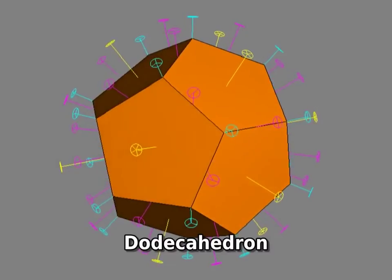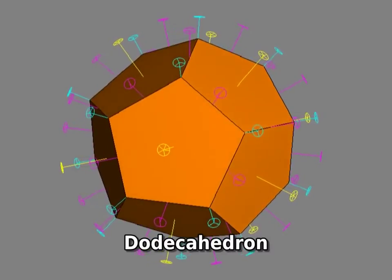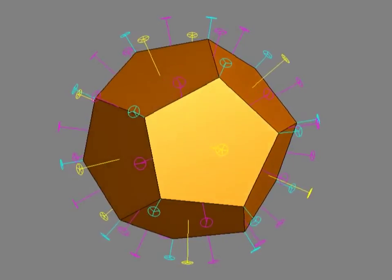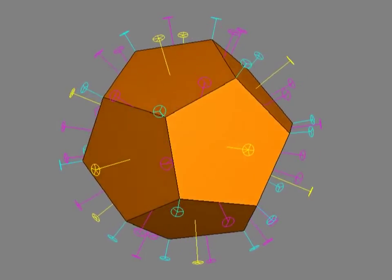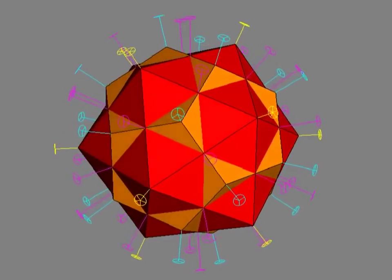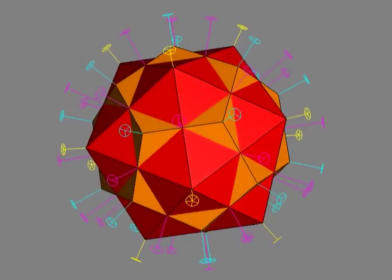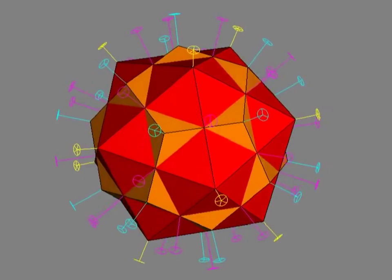These same 31 axes are the symmetry elements of the dodecahedron. But here the 5-fold axes go through the faces, and the 3-fold axes go through the vertices. Here's an icosahedron and dodecahedron together in dual position, which shows their relationship and how they have the same arrangement of axes.